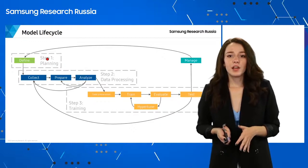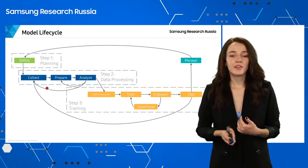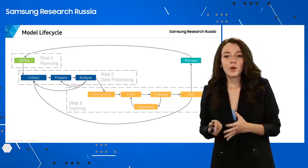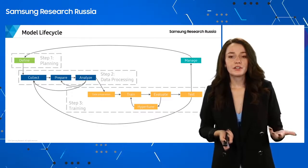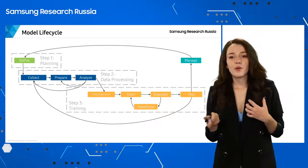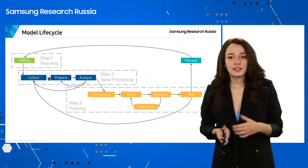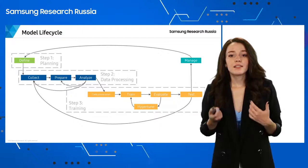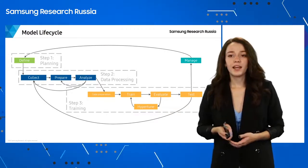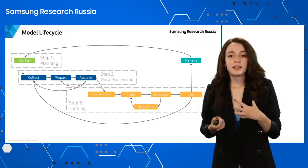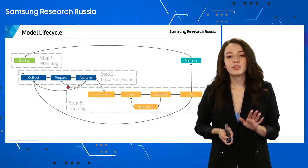When we have clear goals, we can go to the second step: data processing. First, we need to collect data — we need to know where to get it, whether we collect it manually ourselves, take it from a customer, from the internet, or buy a dataset. Then we prepare the data: clean it, find features and labels we need. Then we analyze the data to check what is missing.